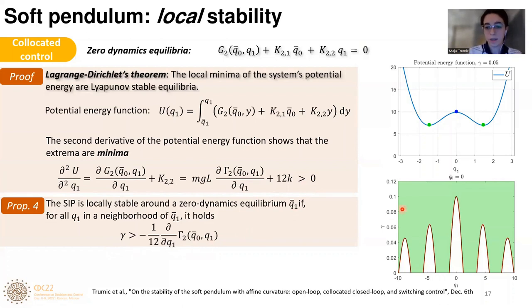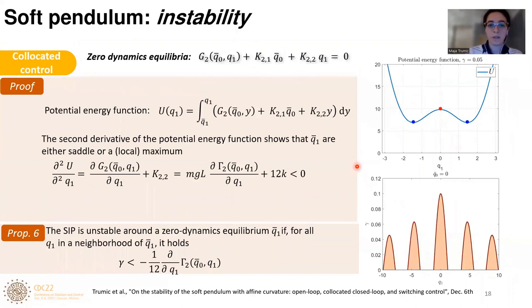Basically, for the region that is painted here in the green color, this condition is satisfied and all equilibria that are found within this region are stable equilibria. Similar analysis can be done for unstable equilibria. If we assume that our second derivative is less than zero, we obtain this condition. This means that our equilibria will be the maxima of a potential energy function, and this region takes this red-colored part of the chart.